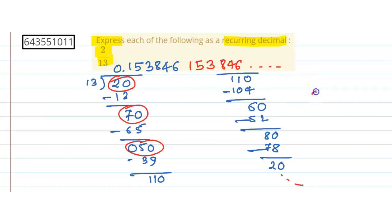Therefore if we write this 2 by 13, it can be written as 0.153846 bar. Bar represents that group of numbers, the group of digits repeating.